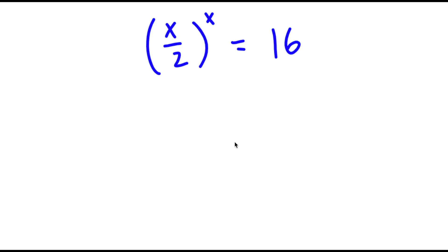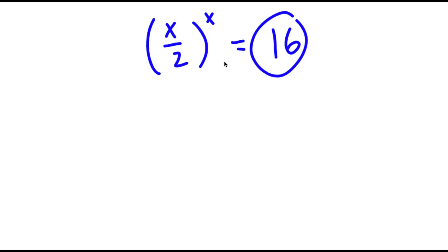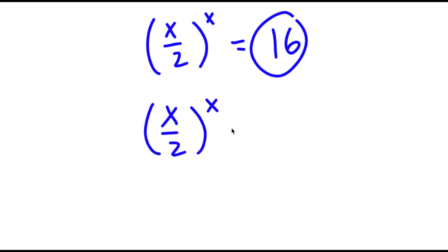In this problem, I have x over 2 to the power of x is equal to 16. To solve this, I'm going to first start by rewriting 16 as 2 to the power of 4. So now I have x over 2 to the power of x is equal to 2 to the power of 4.